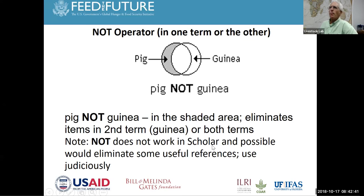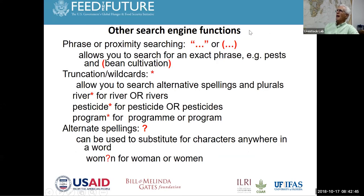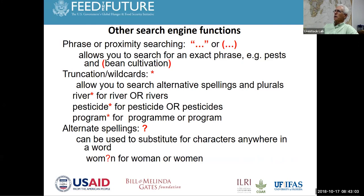Quotes or parentheses pull together exact phrases — for example, 'pests and bean cultivation.' For plurals you can use the asterisk: 'pesticide*' gives you pesticides or pesticide program. The asterisk also handles two spellings. A question mark can be used for alternate spellings within a term. A good example in health is 'gynecology,' which is spelled differently in British English and American English.